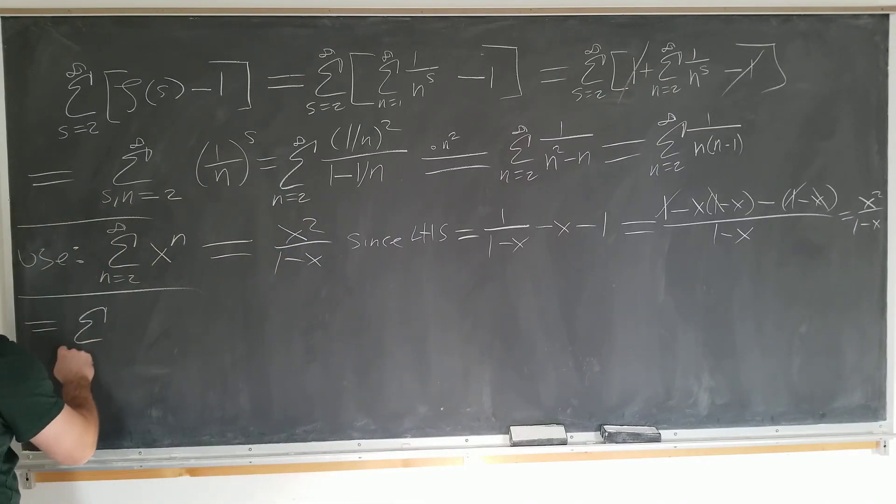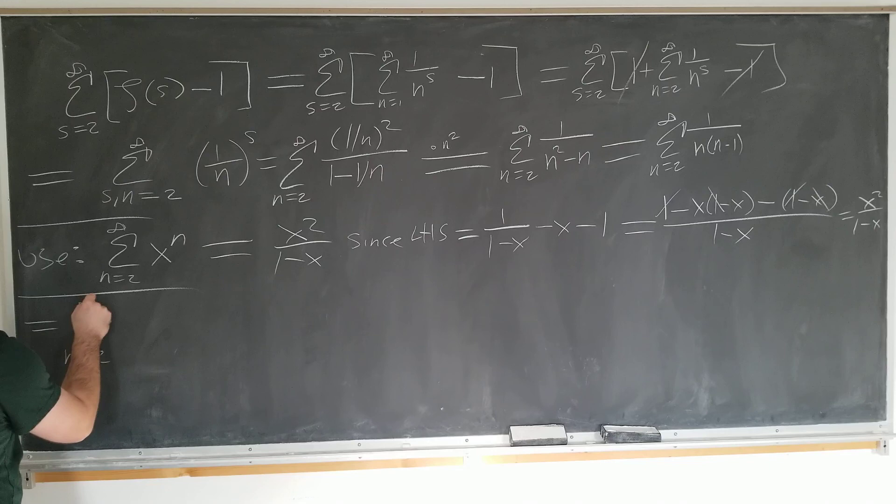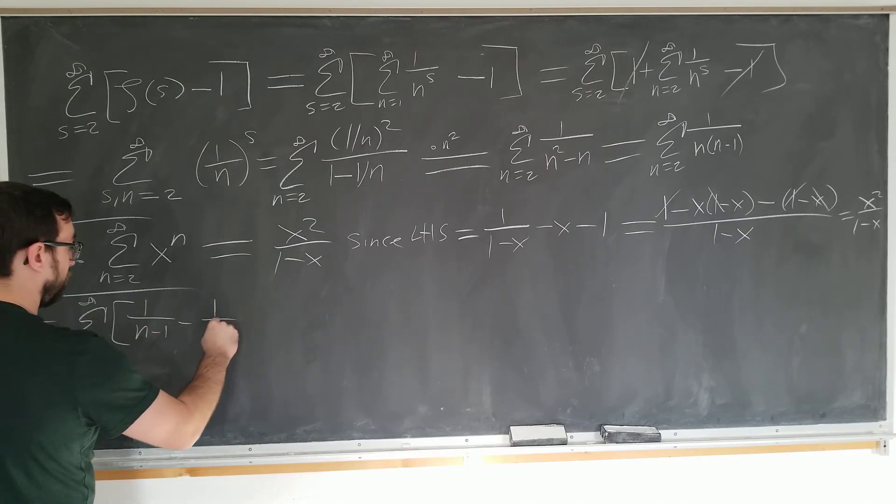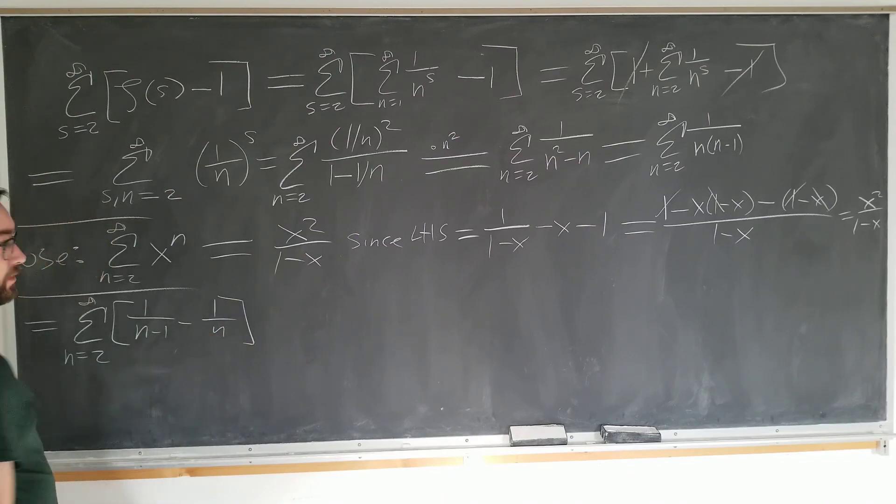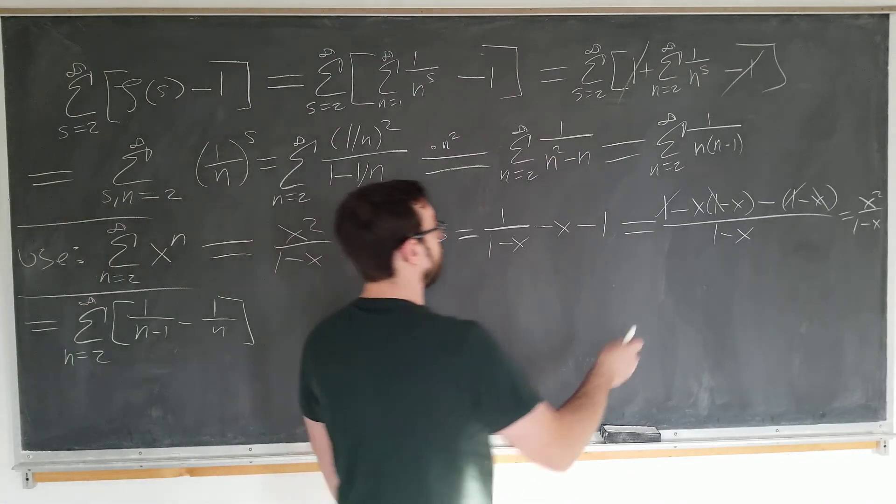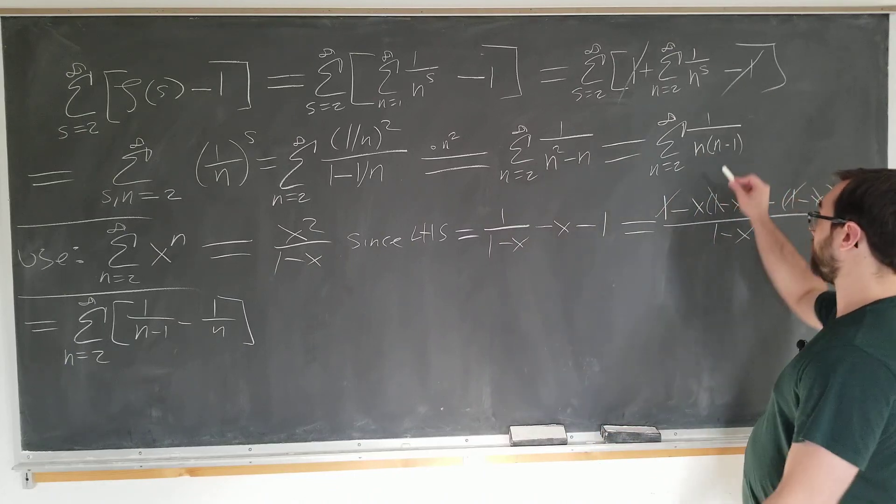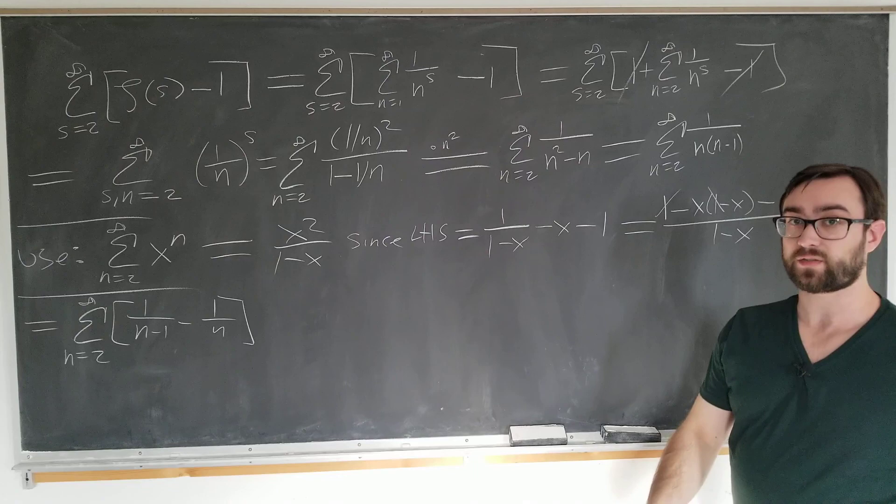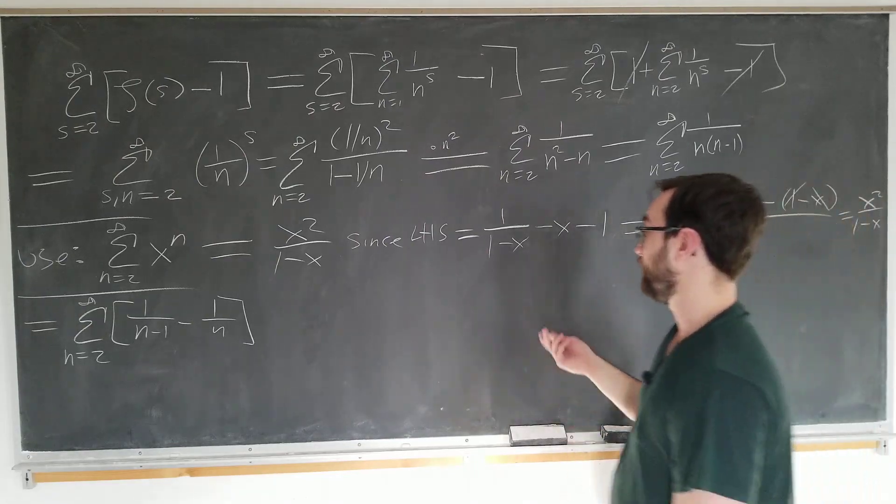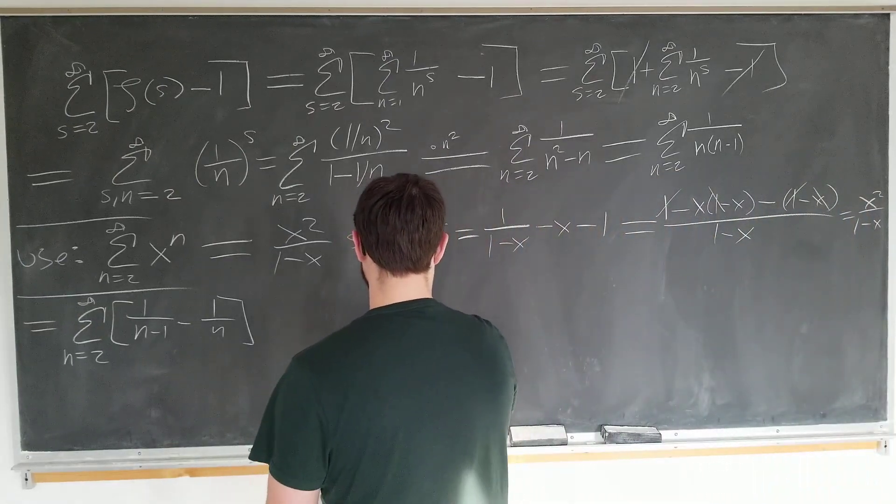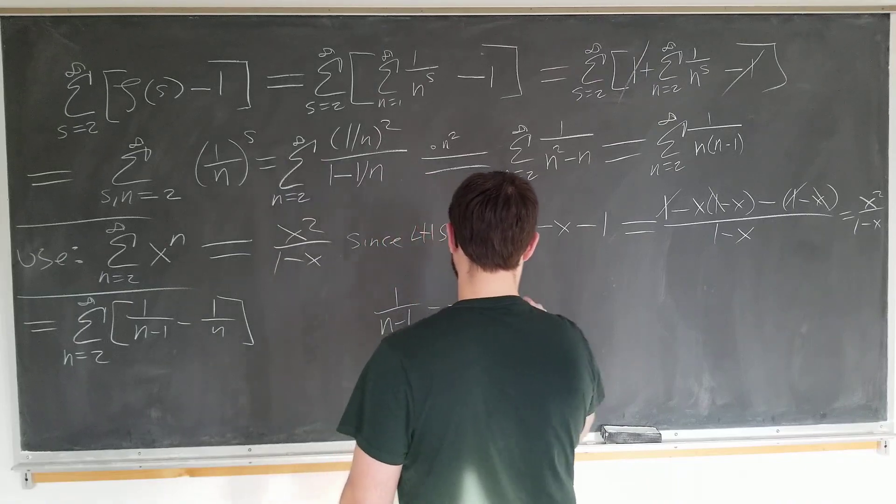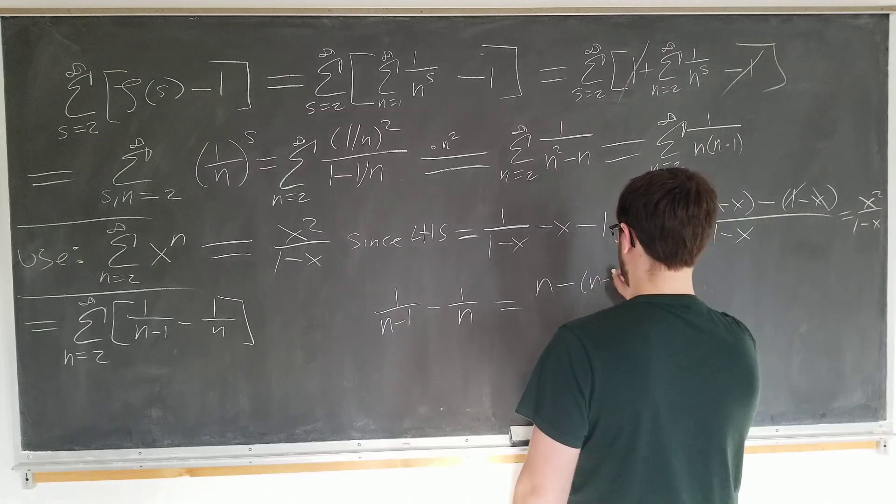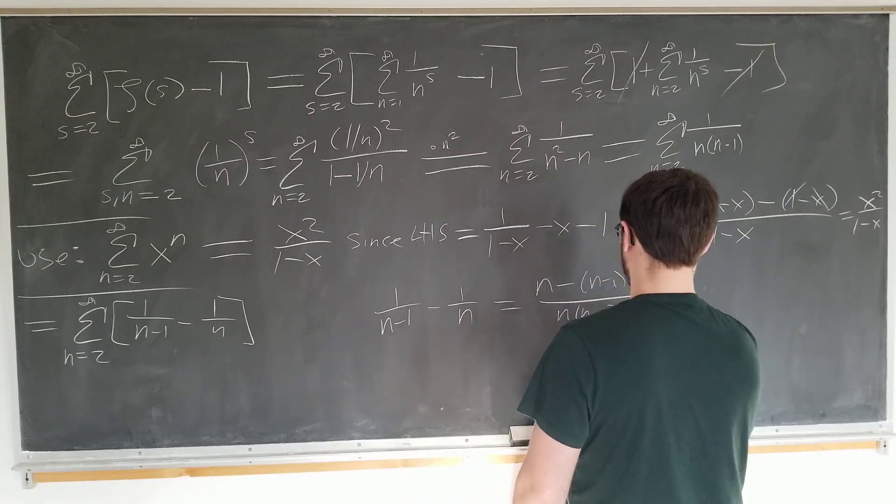This is equal to sum n going from 2 to infinity of 1 over n minus 1 minus 1 over n. Why? Well, if you do partial fractions, you know that you're going to separate it into a combination of terms, one of which is 1 over n and one of which is 1 over n minus 1. So basically you just guess, and we show that it is true by checking it by using a common denominator: n minus n minus 1 over n times n minus 1.